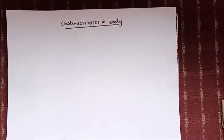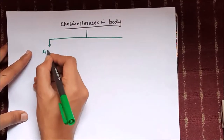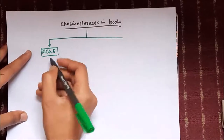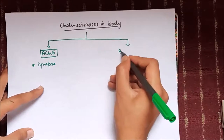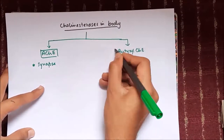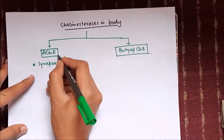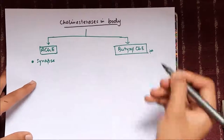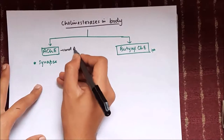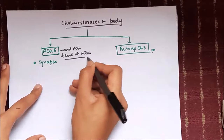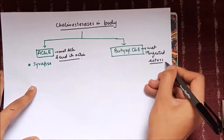There are two main types of cholinesterases in the body: true cholinesterase, also known as acetylcholinesterase, and butyrylcholinesterase, which is called pseudocholinesterase. The main location of acetylcholinesterase is in the synapse, and its function is to end the action of acetylcholine by metabolizing it.